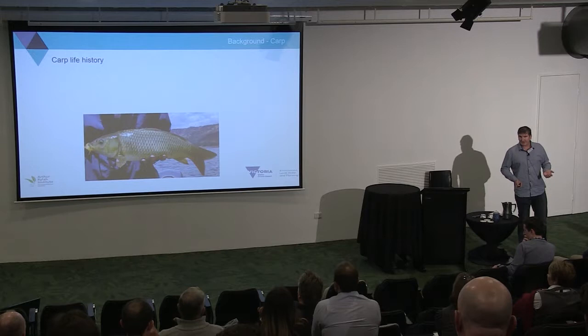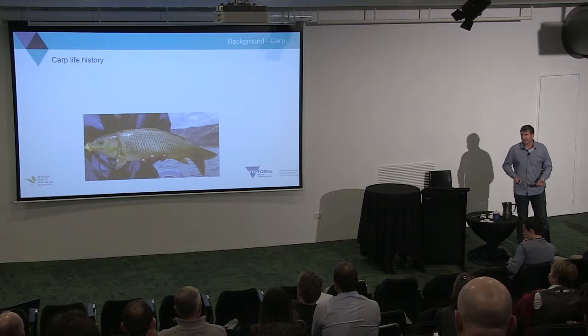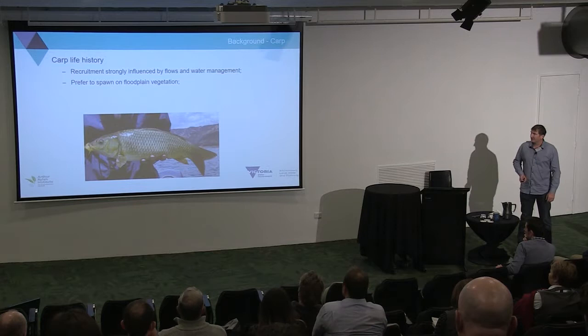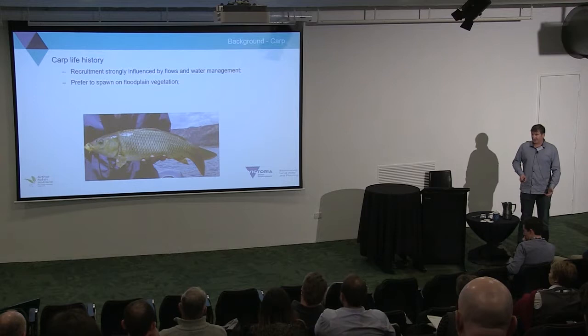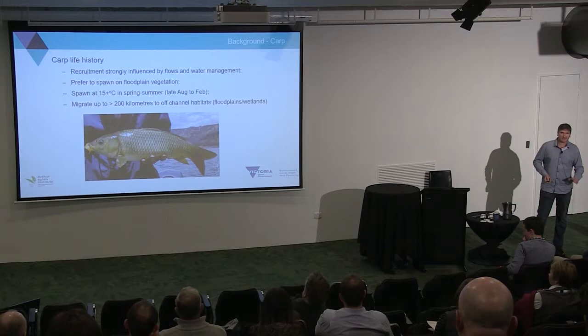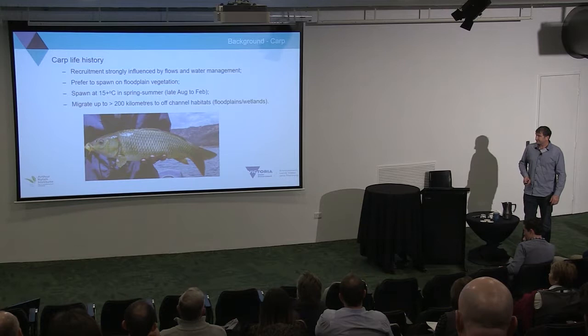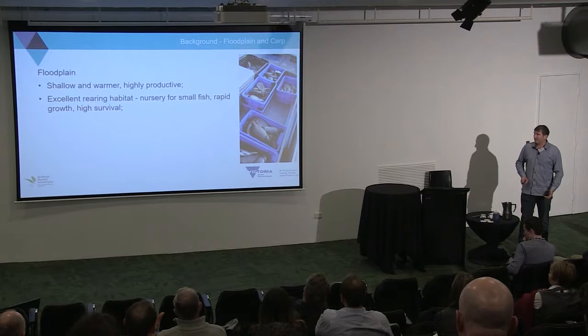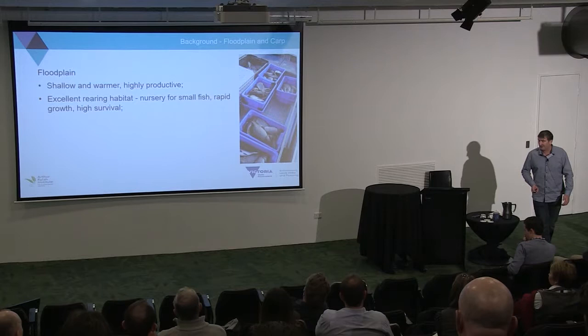Charles covered a bit about carp life history — fast growing, mature early, fairly fecund, around a million eggs, that sort of stuff. But what else do we need to know about them for this area? We know their recruitment is strongly influenced by flows and water management. We know they love to spawn on floodplain vegetation, spawning at 15-plus degrees in spring and summer, and they can migrate more than 200 kilometres to get to inundated floodplain vegetation and wetlands. The floodplains are highly productive — shallow, warmer, lots of growth — and they're excellent rearing habitat for lots of fish, but unfortunately for carp as well.